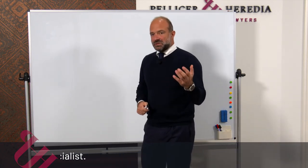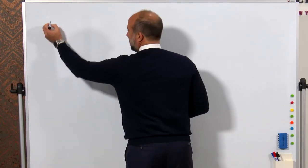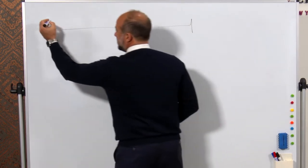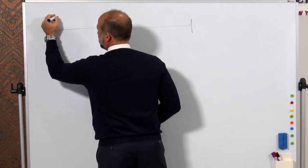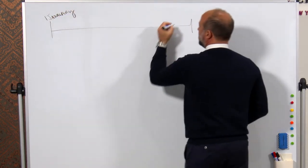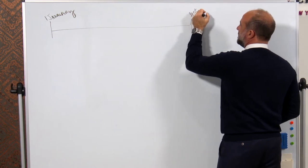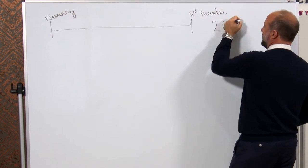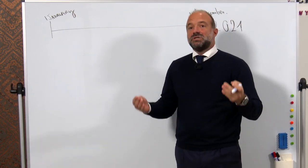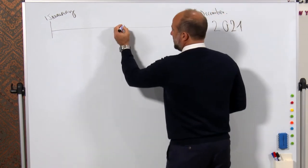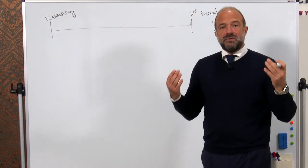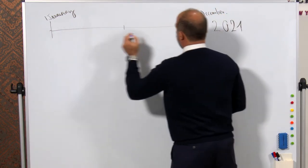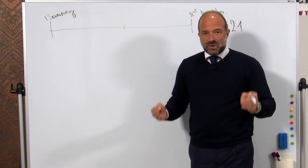You became resident in Spain this year. For tax purposes in Spain, we count the natural year from the 1st of January to the 31st of December. Let's say this year is 2021 and you become resident in Spain in 2021. The first rule is that if you live in Spain more than 183 days in a natural year, then you are tax resident in Spain.